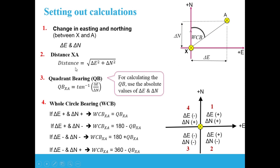The major steps for calculating these two numbers: first, we need to calculate the change in easting (delta E) and change in northing (delta N) between X and A. Delta E is the distance along the easting axis from X to A, and delta N is the distance along the northing axis from X to A.